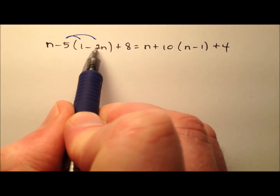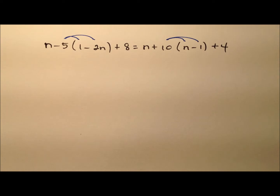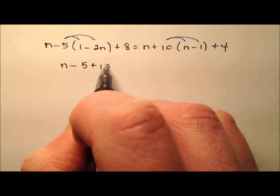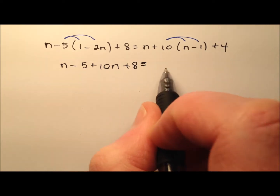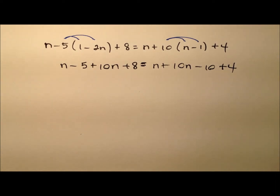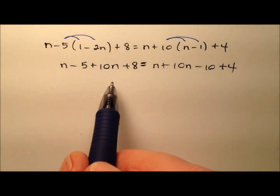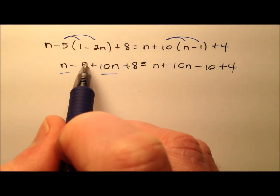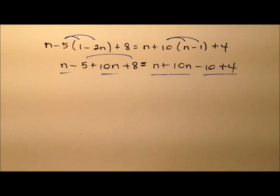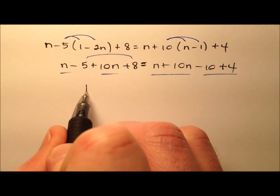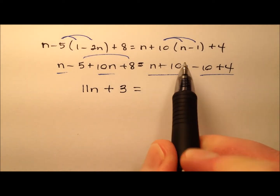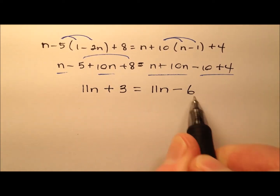We have some parentheses here, so let's go ahead and do some distribution to get rid of those parentheses. When we do that, it looks like we'll have n minus 5 plus 10n plus 8, and that will equal n plus 10n minus 10 plus 4. On the left side we have like terms we can combine, and on the right side the same thing. So the n and the 10n will make 11n, and the negative 5 plus 8 will make plus 3. That will equal 11n, and negative 10 plus 4 will make negative 6.